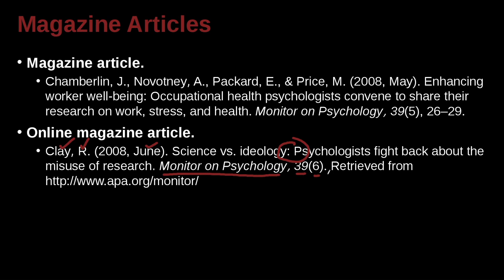Period. That's the end of the citation. However, we're going to add a little bit more — this is extra on the end, so we don't have a period at the end here. This is just like a bit of extra information: 'Retrieved from,' and here is the URL address. That's a bit of an exceptional case.